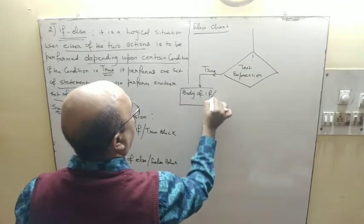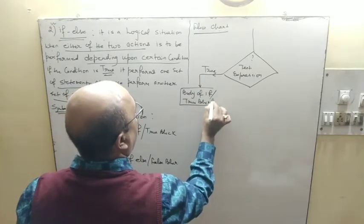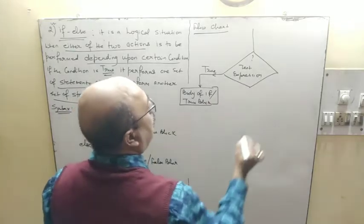True block when condition is true. False path when condition is false.